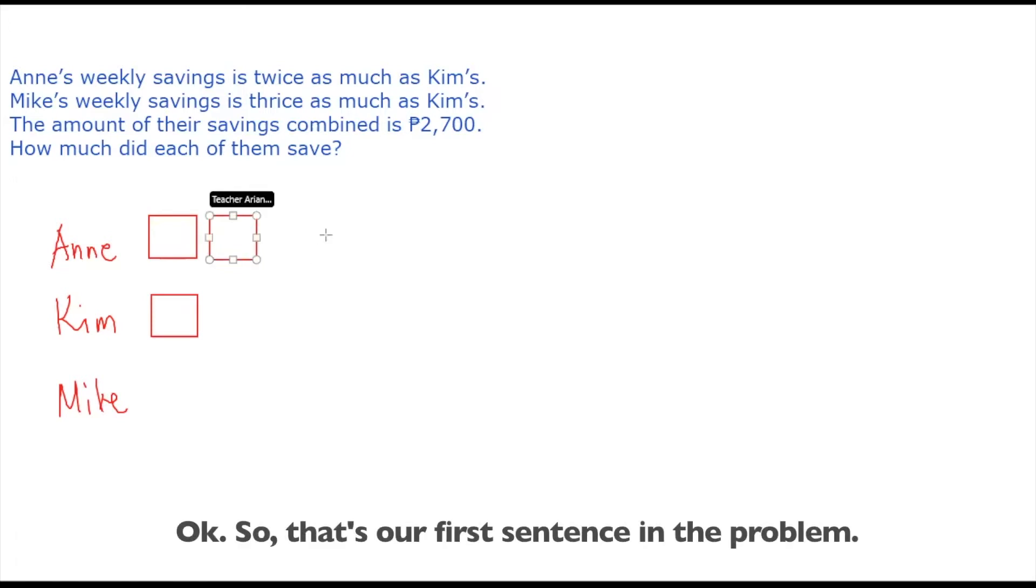Okay, so that's our first sentence in the problem. Next sentence is Mike's weekly savings is thrice as much as Kim's. So kinompare ulit yung savings ni Mike with Kim. We already represented Kim's savings with this one block. So for Mike's savings, which is thrice or three times as much as Kim's, we can use three of those same blocks. Since it's thrice as much as Kim's.